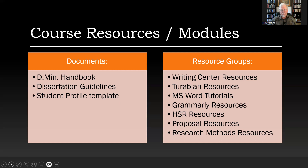Remember, at the bottom of the module section you have a large number of relevant documents. The Demian Handbook cannot be minimized — it is essentially the Bible for the Doctorate Ministry program, both for faculty and for students. That's updated from time to time, so downloading the most recent copy will be helpful. There are dissertation guidelines and a student profile template, which is an assignment coming up toward the end of the semester that is very important. You will also find resource groups at the bottom of the module section that will provide you with every resource you need, not only to do well in this class, but ultimately to do well with your project and dissertation.